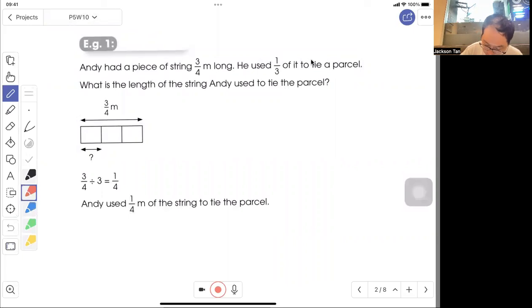Andy has a piece of string 3/4 meter long. He used 1/3 of it to tie a parcel. You can see that there is no measurement unit for the fraction used.